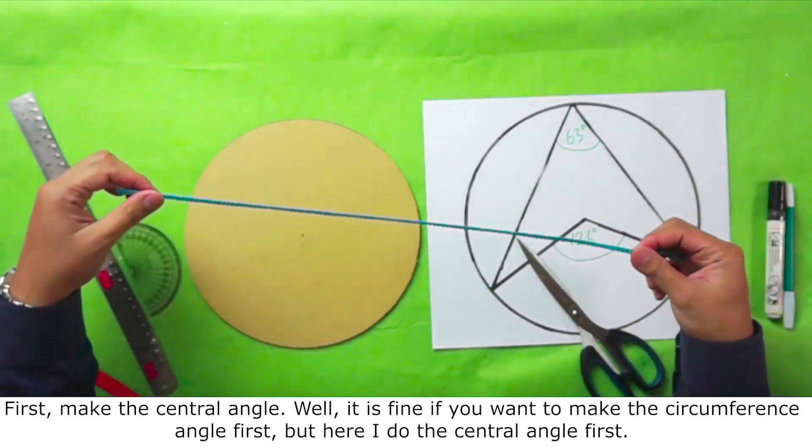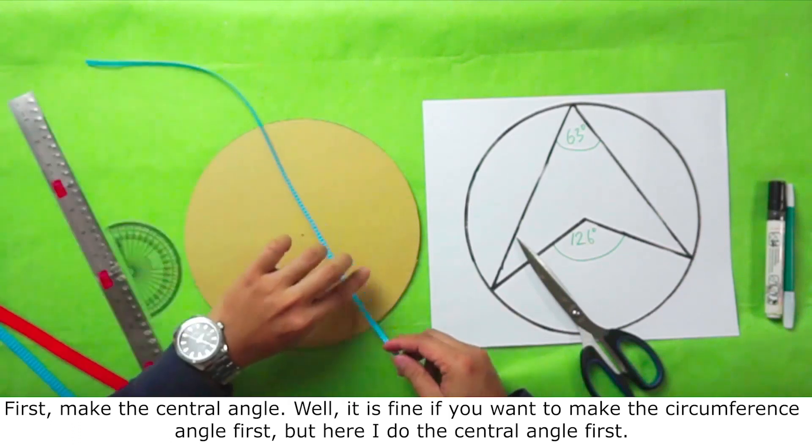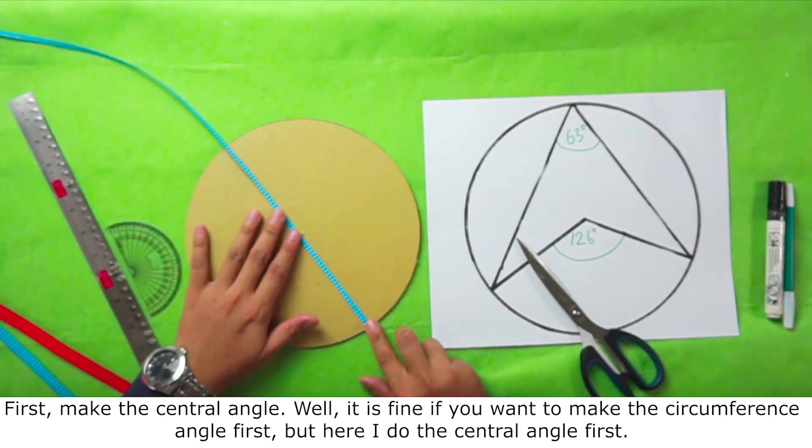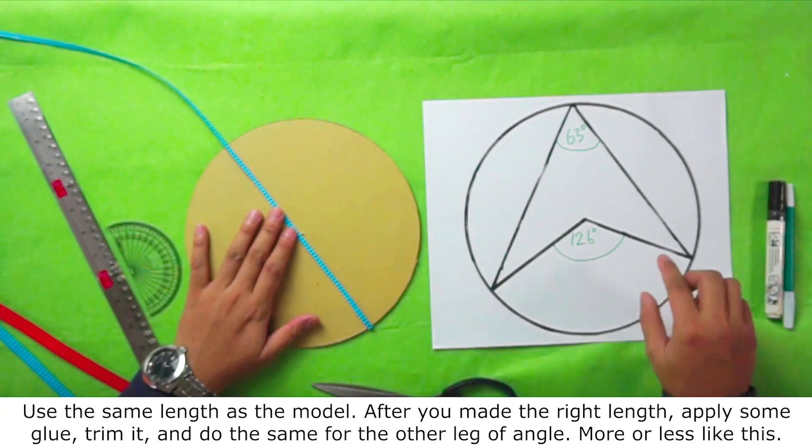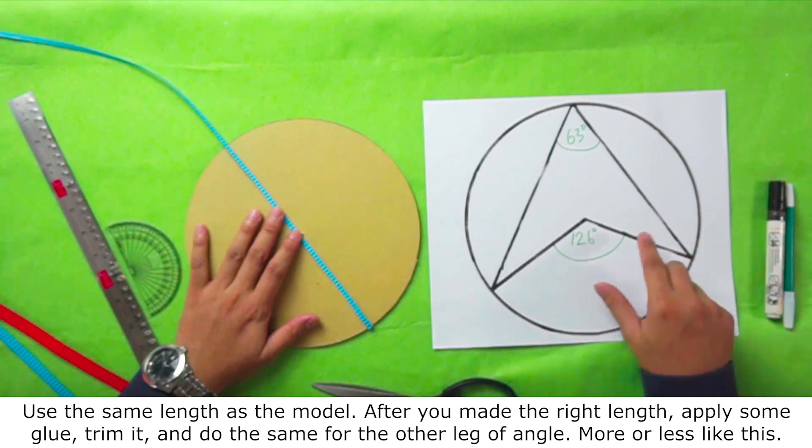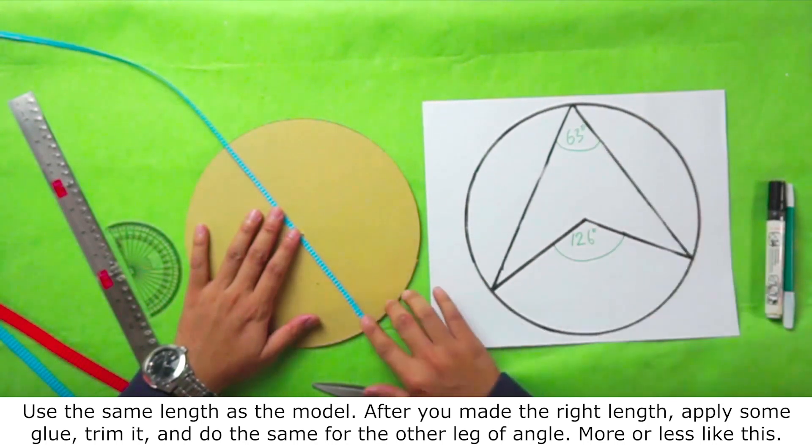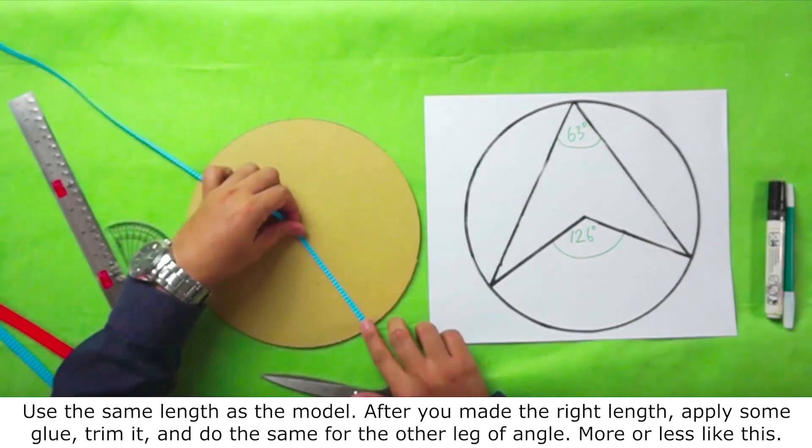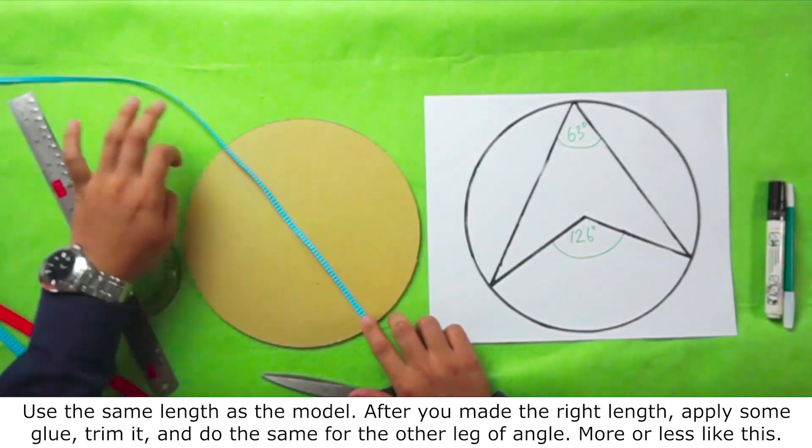First, make the central angle. Well, it is fine if you want to make the circumference angle first. But here I do the central angle first. Use the same length as the model. After you meet the right length, apply some glue, trim it, and do the same for the other length of angle. More or less like this.